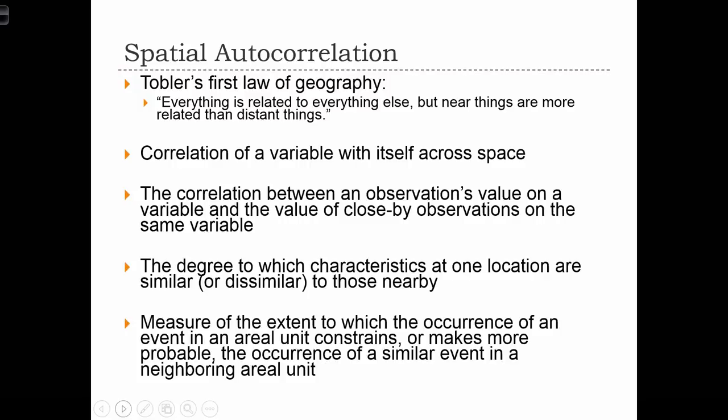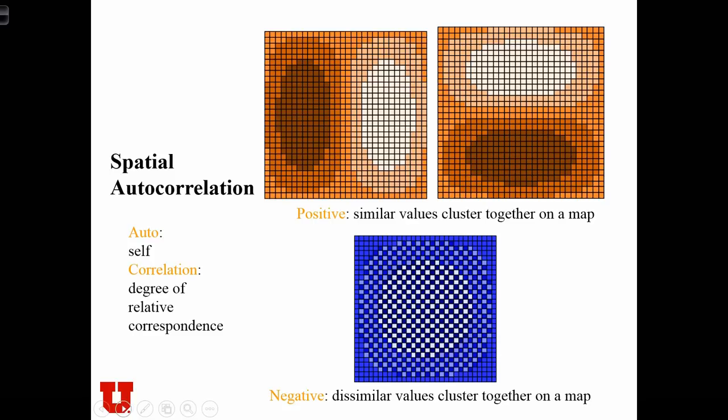Spatial autocorrelation has to do with Tobler's first law of geography, that everything in space is related to everything else, but near things are more related than things far apart. Given a map of data values, spatial autocorrelation has to do with whether or not similar values cluster together on a map.